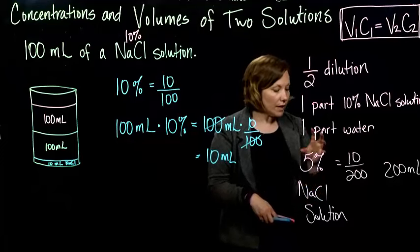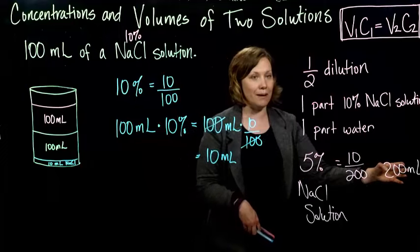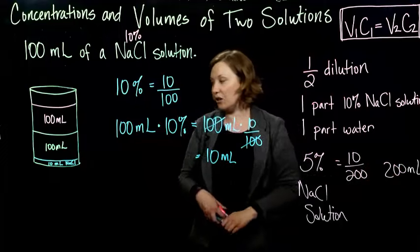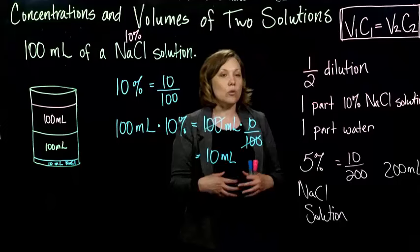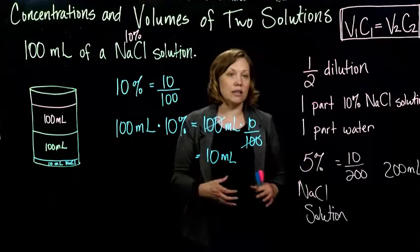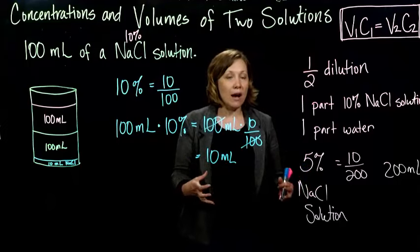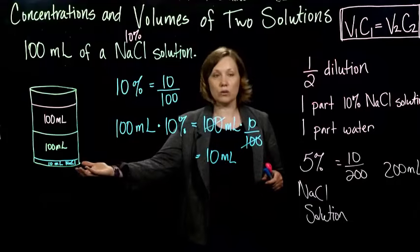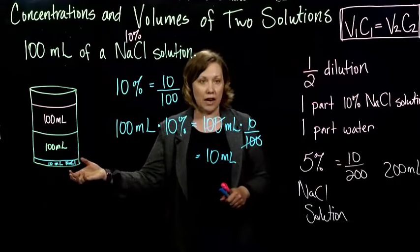And I have 200 milliliters of that 5% sodium chloride solution. So, and if we check it out, if we take the 5% and multiply by the 200, we still get back to the 10. So what we're going to exploit in this section is that the amount of the substance that we're talking about, the pure substance in there, doesn't change.